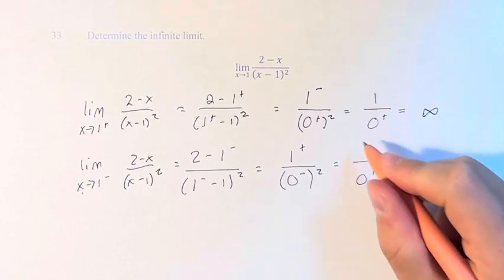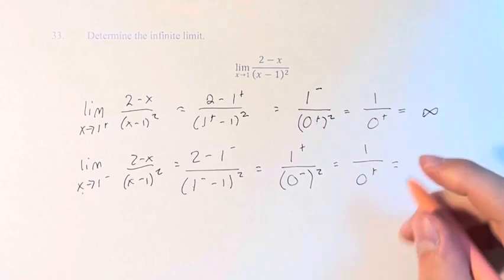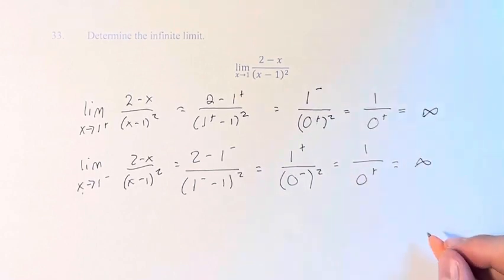And this is just a number divided by numbers approaching 0. Since they're both positive, it's infinity.